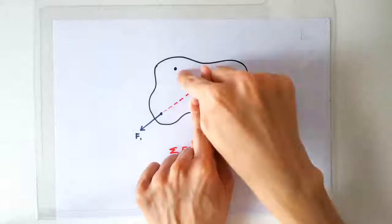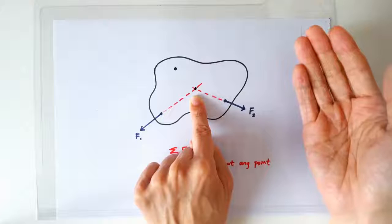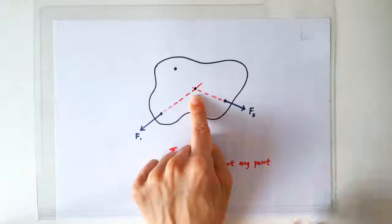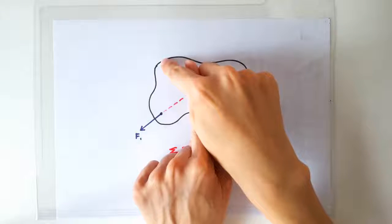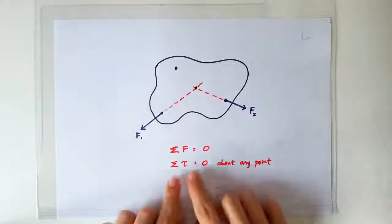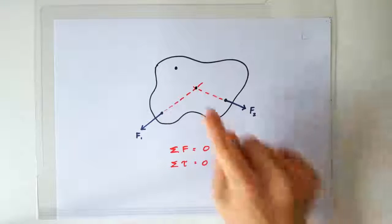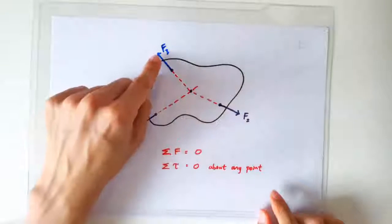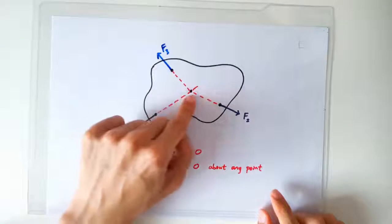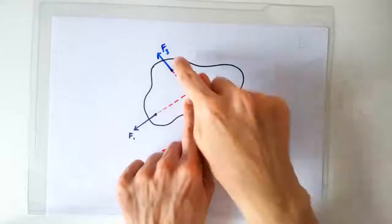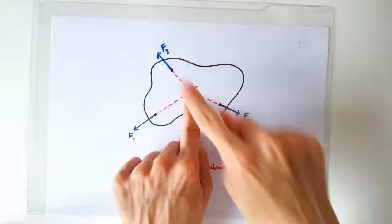So is F3 going to produce a clockwise or anticlockwise moment? The answer is neither. F3 should also produce zero moment about this point because net moment should be zero about any point, including the intersecting point here. This means the line of action of F3 should also pass through this intersecting point. So F3 must be directed along this direction.